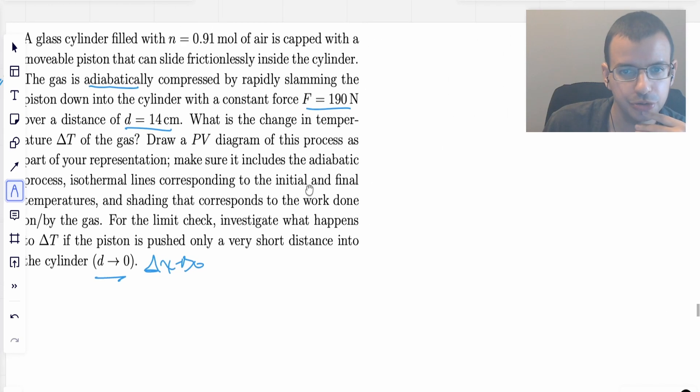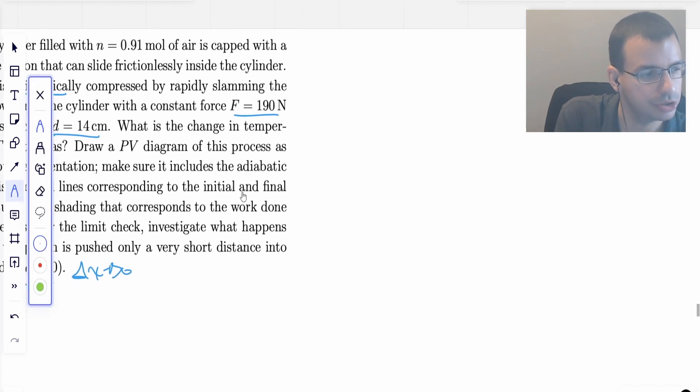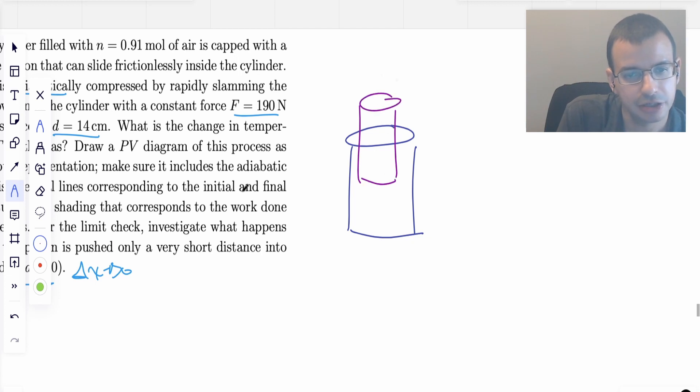First thing we're going to do is draw a picture because it's the first thing we always do. We have a piston and a cylinder. The piston moves down with a force of 190 newtons and it moves a distance delta X of 0.14 meters. We want to know the change in delta T of this spot right in there.